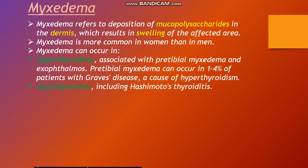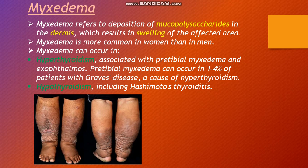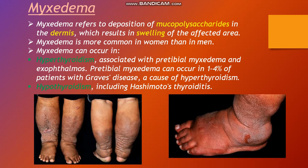Hypothyroidism including Hashimoto's disease is also associated with myxedema. Though myxedema is known as hypothyroidism of adults, it can be associated with pretibial myxedema. Pretibial myxedema involves the deposition of mucopolysaccharides in the dermis, as seen in the slides.